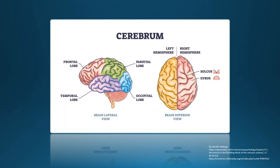The brain is composed of either white matter or gray matter. White matter is the myelinated axons of neurons, and the gray matter is composed of nerve cell bodies and dendrites. It's the working area of the brain and contains the synapses and the area of neuronal connections.